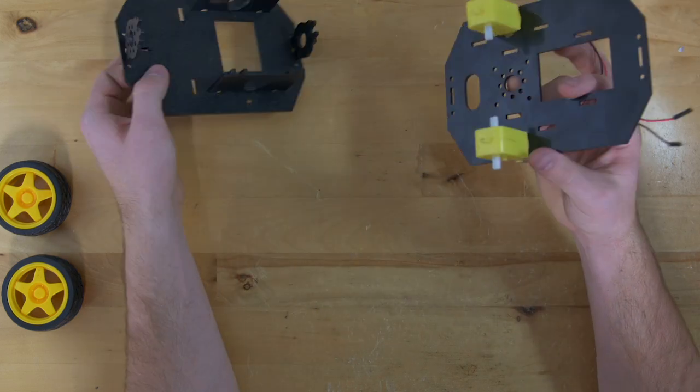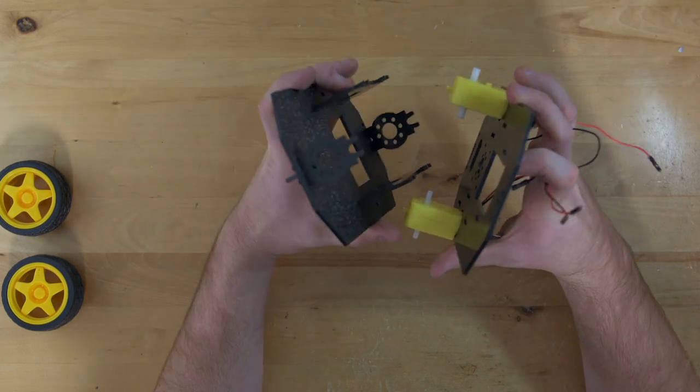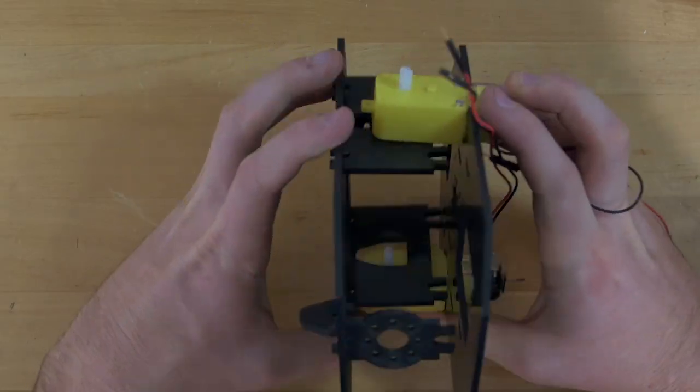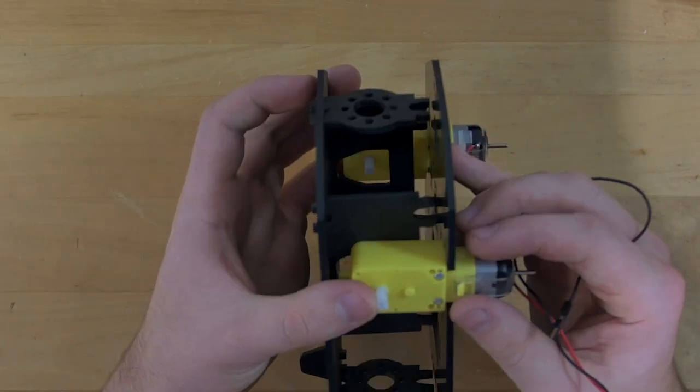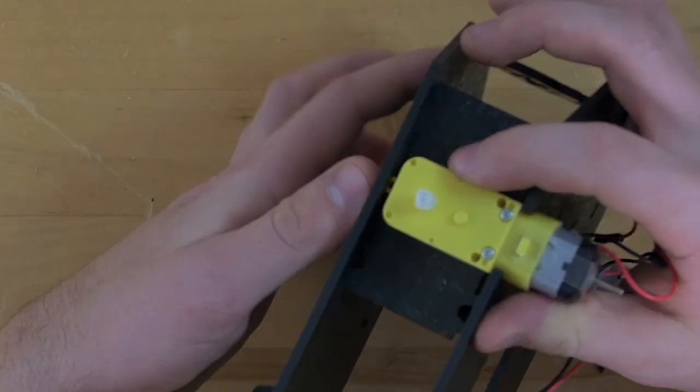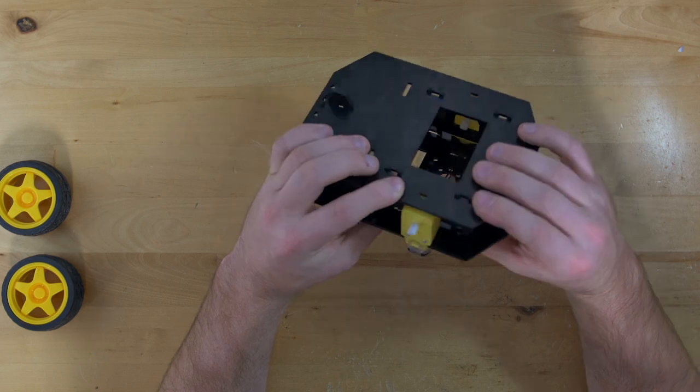Next, we'll attach the top plate to the bottom plate. Do this by making sure that the output shafts of your motors go inside of your side plates, then line up the notches on the bottom of your motors to the holes on the bottom plate.